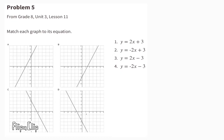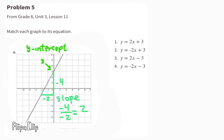Problem number 5, from 8th grade Unit 3 Lesson 11: match each graph to its equation. Graph A has a y-intercept of 3 and a slope of 2 (down 4, left 2). We need an equation with slope 2 and y-intercept 3 — that would be equation number 1. Graph A matches with equation number 1.